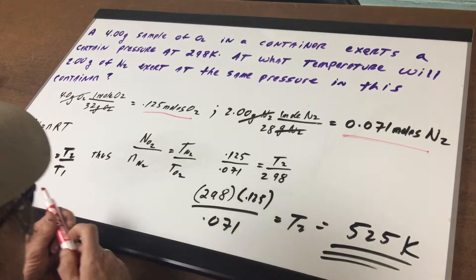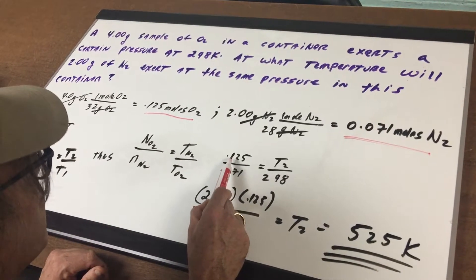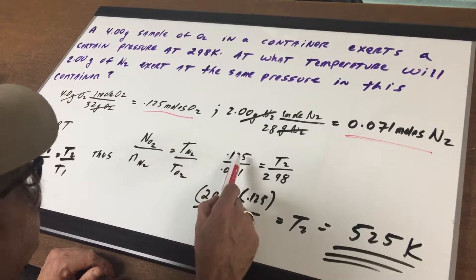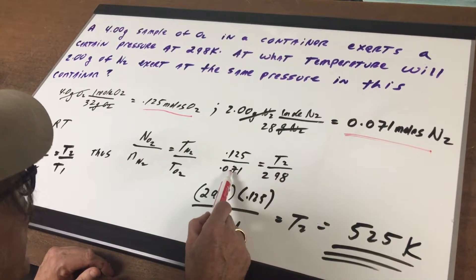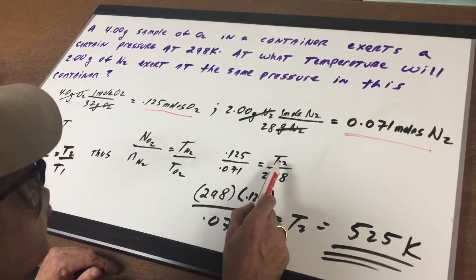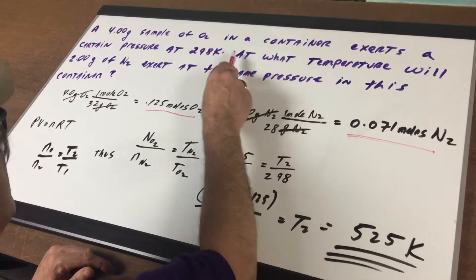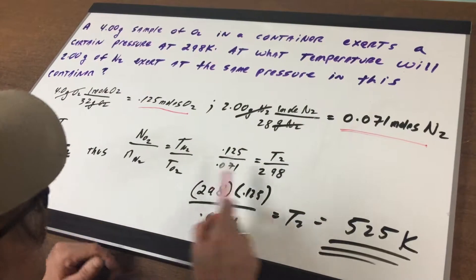But these are indirectly related. So go back. The moles of the oxygen is 0.125. The moles of the nitrogen is 0.71. We don't know the temperature. That's what I'm asking. At what temperature will the nitrogen be at? That's the T2.